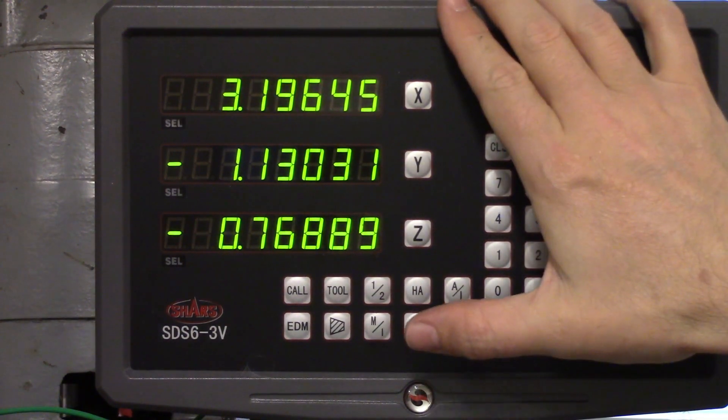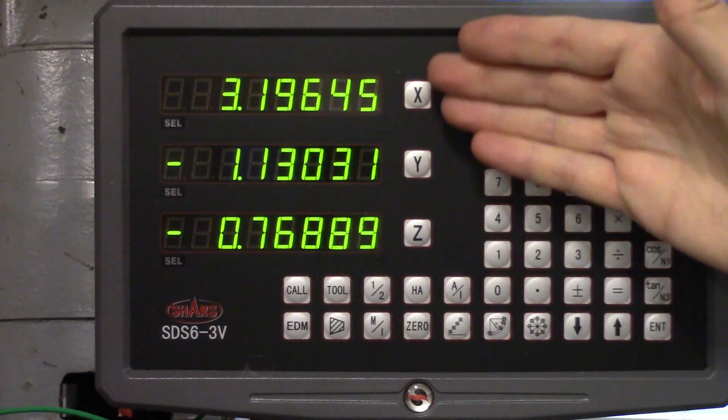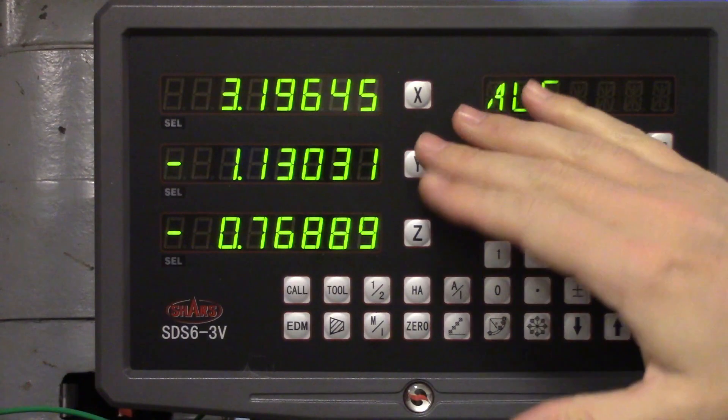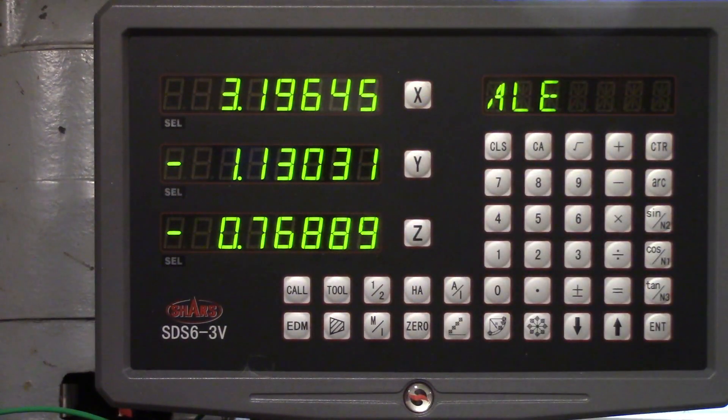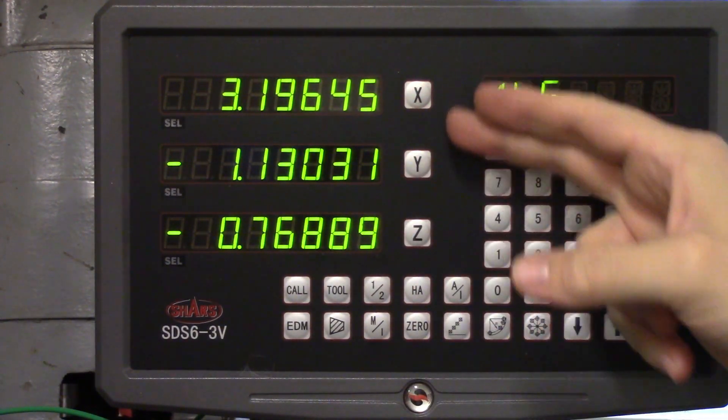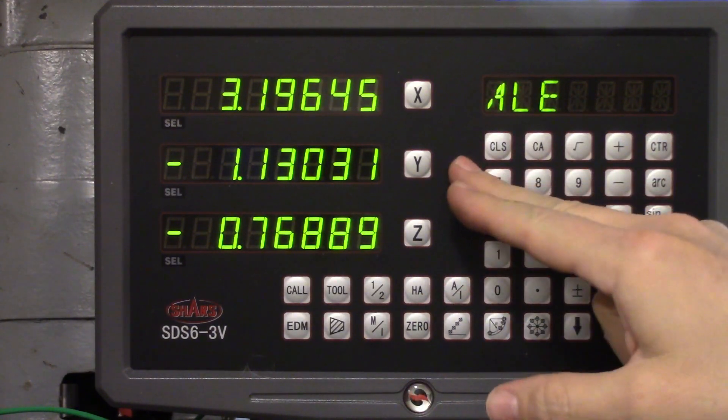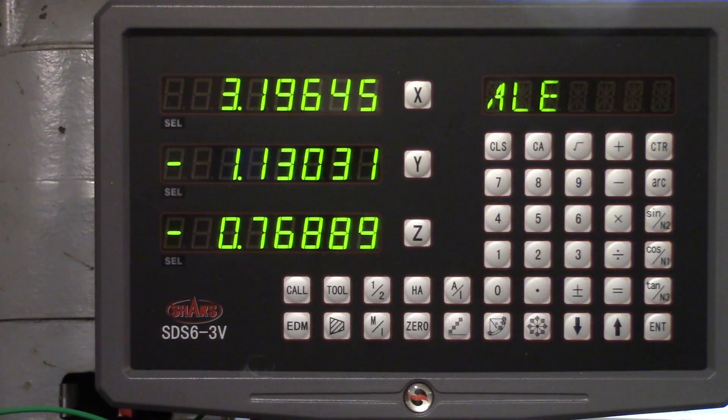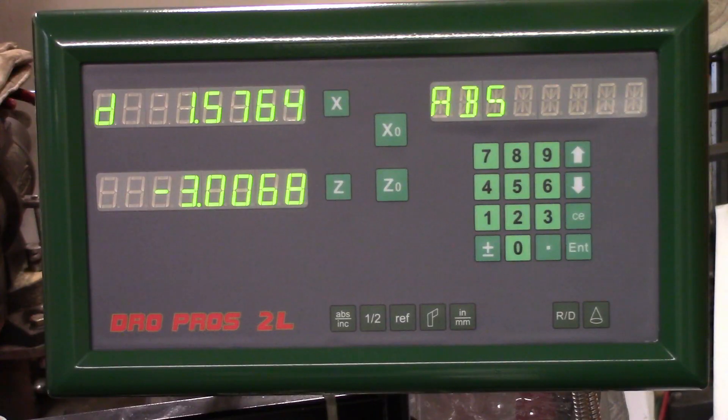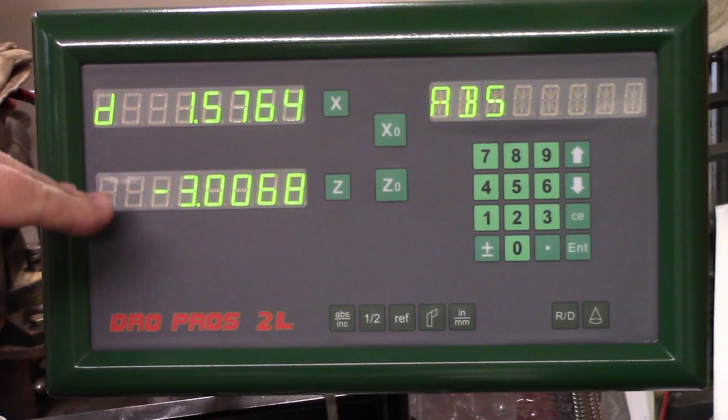Looking at the digital readout or DRO, you have separate readouts for each axis and they can be zeroed individually. The one for my mill has X, Y, and Z, but it's very common to only have X and Y since a three axis DRO is more expensive. The lathe DRO will only have X and Z.